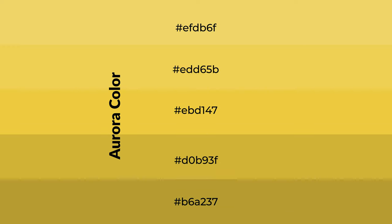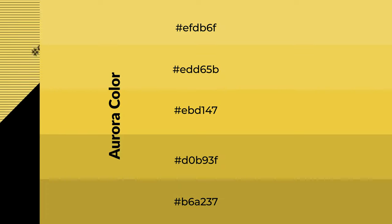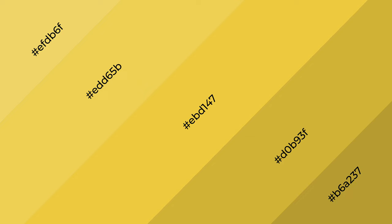To generate shades of a color, we add black to the color, and it is used in patterns, 3D effects, and layers. Shades create depth and drama. Aurora is a warm color and it emits a cozier and active emotion.